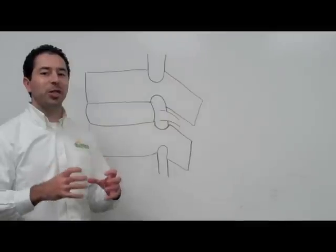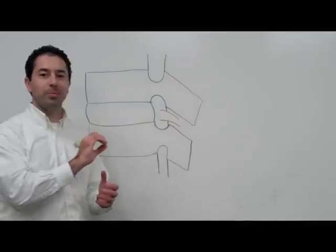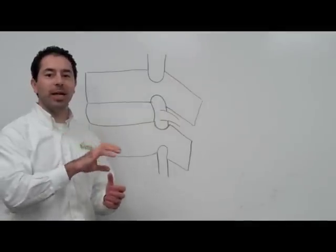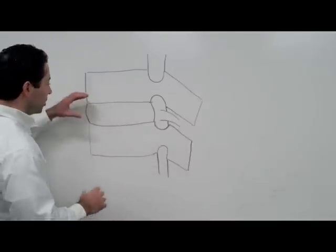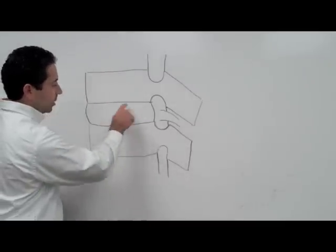So with degenerative disc disease, which you'll see abbreviated DDD on an x-ray or MRI, that's the actual shrinking of that space where the disc is.